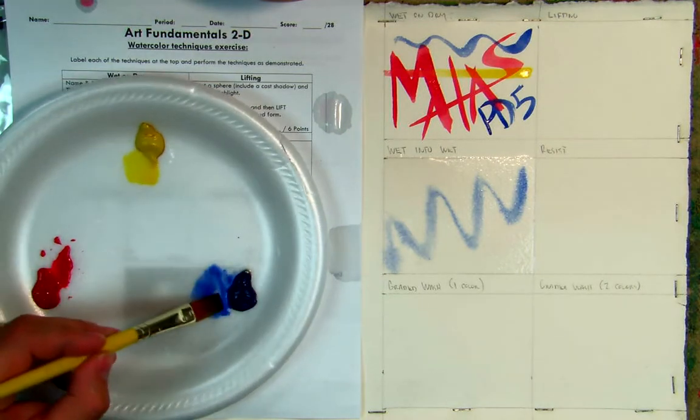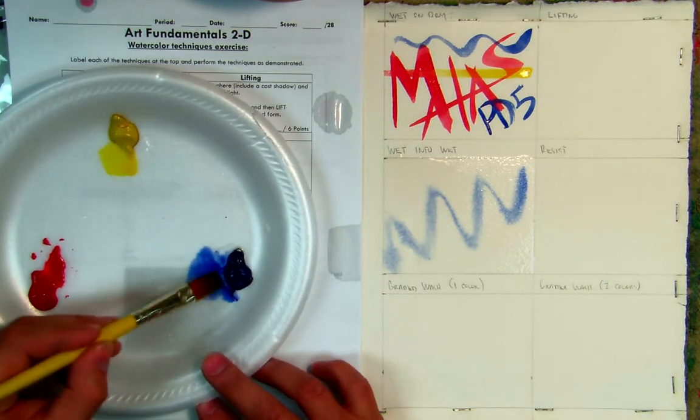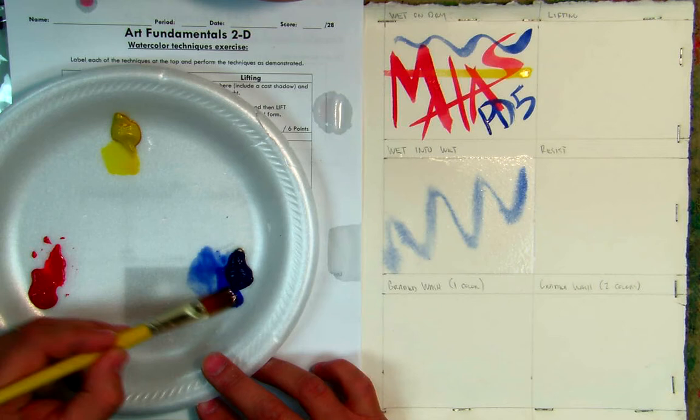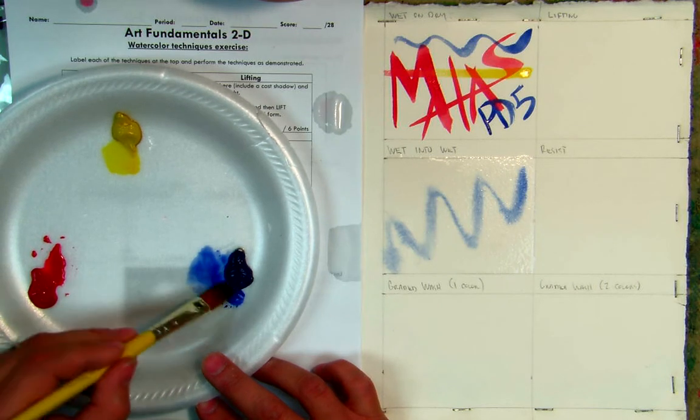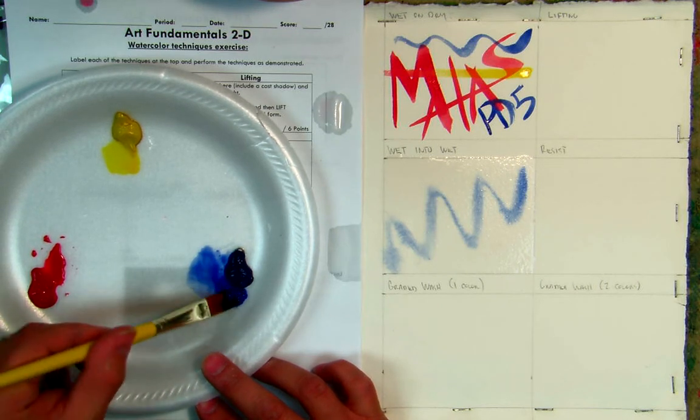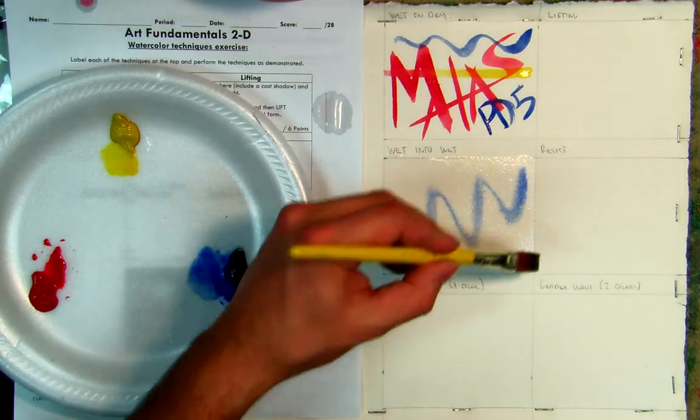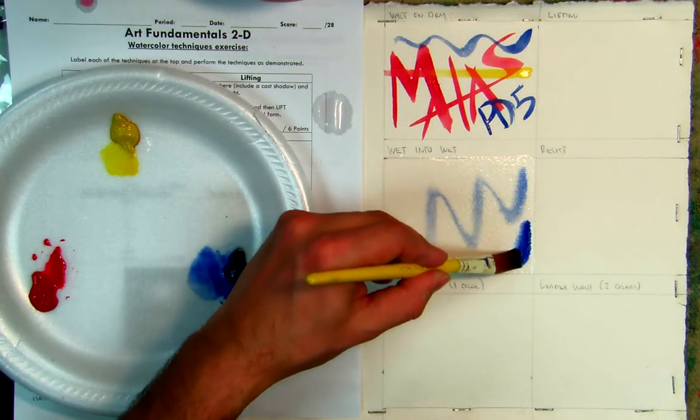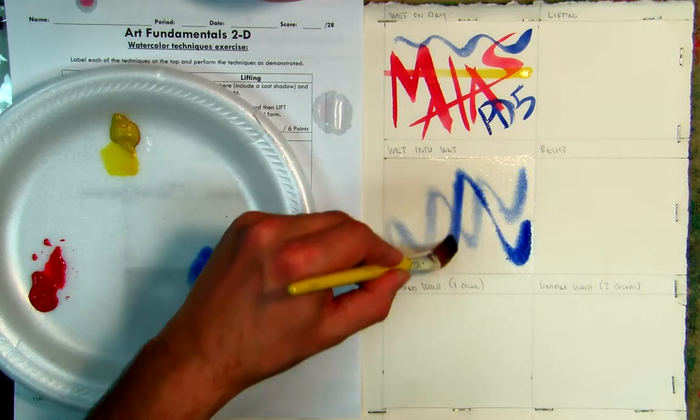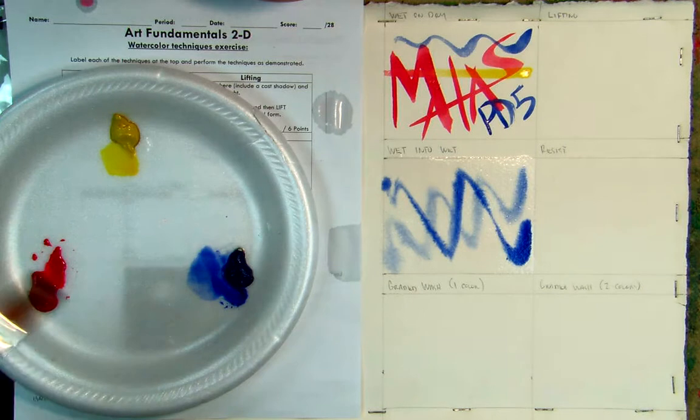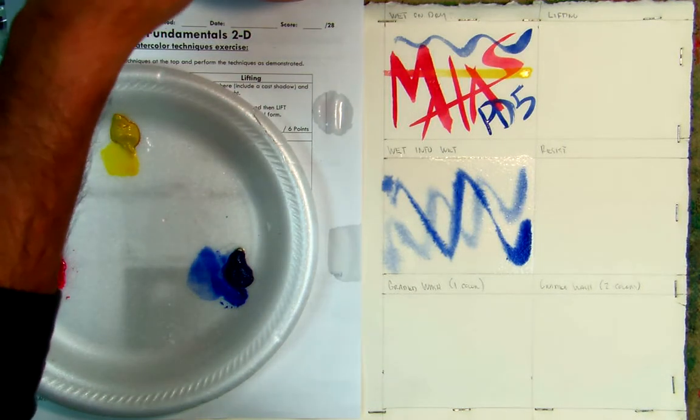So now I'm going to charge up my brush and load it up. Charging is when I add more color to the brush. Loading is when I actually add paint to the brush. So I'm charging and loading. And once again, I'm going to go thick, thin, thick, thin. And let it overlap. Got it?